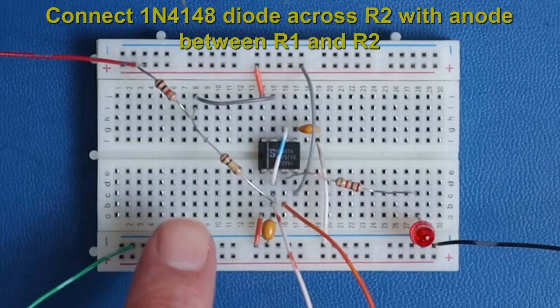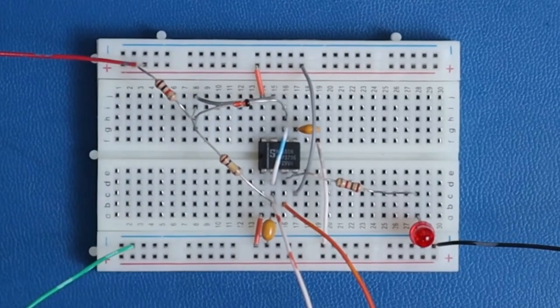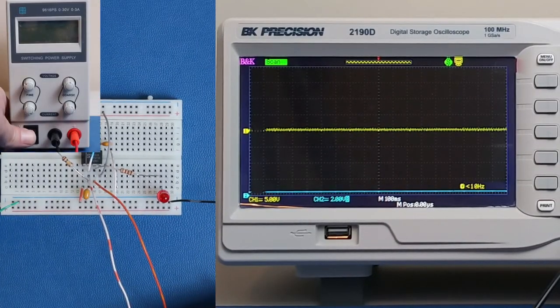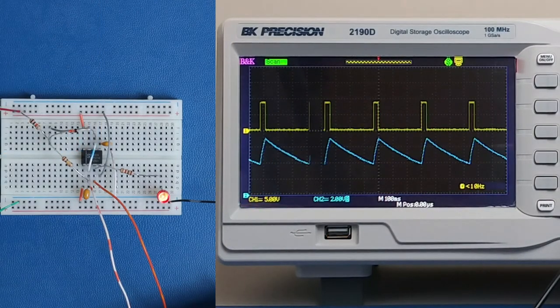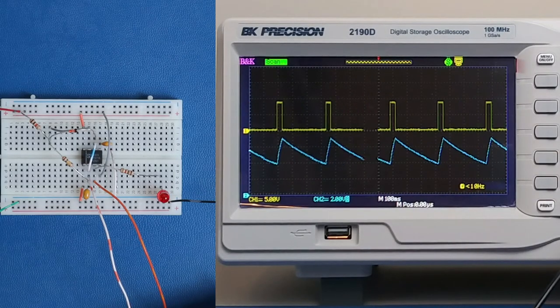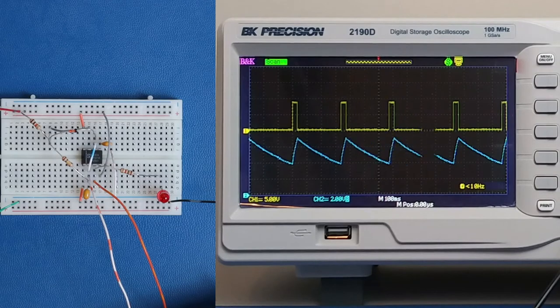Let's add in the diode and look at how it affects the duty cycle. So, I'll keep R1 at 10k and R2 at 100k with C being 4.7 microfarads. See how the duty cycle is less than 50% on the oscilloscope? You can also see how the LED is now off longer than it is on with the diode added. So, this works.